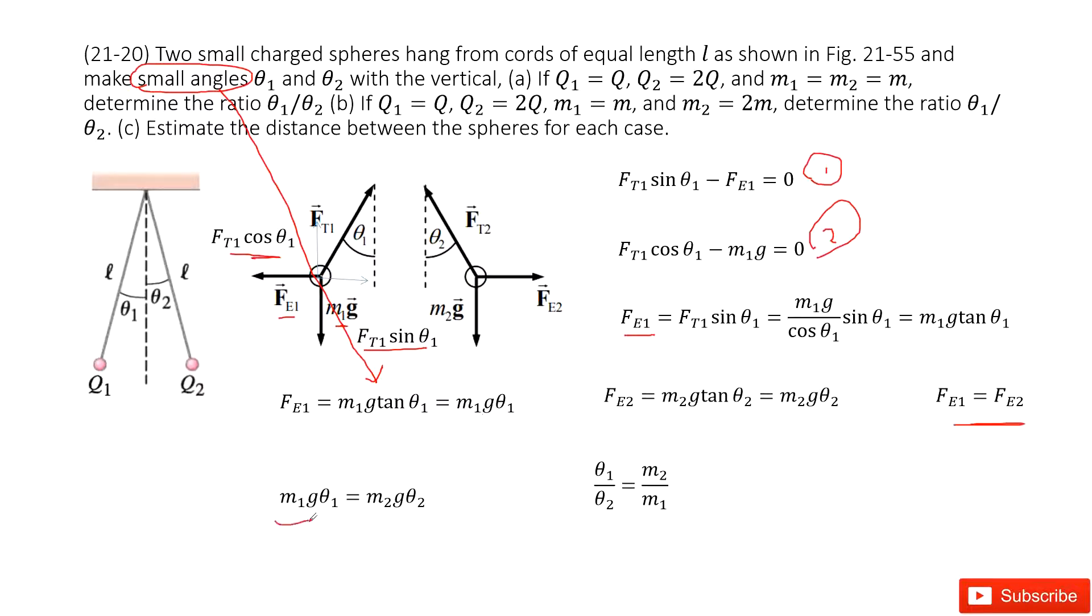So therefore, we can write this equation: Fe1 equals Fe2. And then we get the ratio q1 over q2 equals m2 over m1.